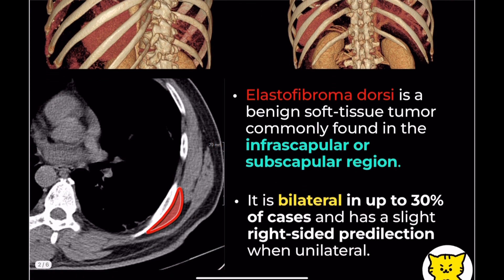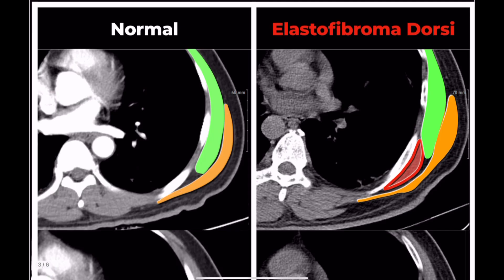This lesion typically appears deep to the serratus anterior (green) and latissimus dorsi (orange) muscles, in the location marked in red.